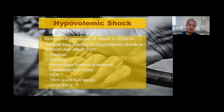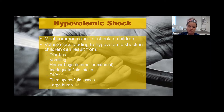The most common shock in children is hypovolemic shock. Causes include diarrhea and vomiting, hemorrhage from trauma—internal or external bleeding—inadequate fluid intake (commonly seen after tonsillectomy, where pain and reluctance to drink create a vicious cycle), DKA in children with undiagnosed type 1 diabetes, third space fluid loss, and large burns. In any of these scenarios, there is low blood circulating in the vessels.